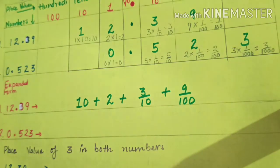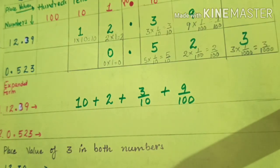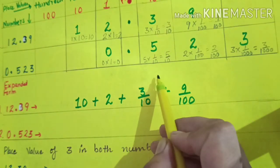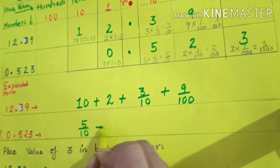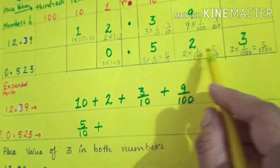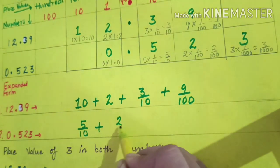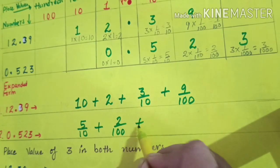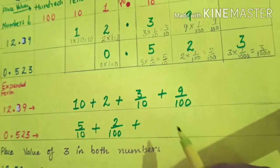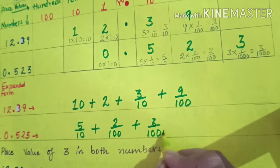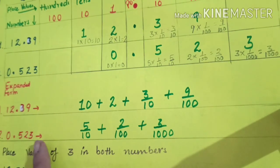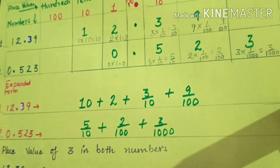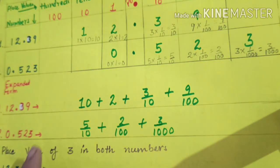We move to five. The place value of five is five-tenths, so we write five over ten. Two is at the hundredths position, and the place value of two is two-hundredths, so two over one hundred. Three is at the thousandths position, and the place value is three-thousandths. The expanded form of 0.523 is: five over ten plus two over one hundred plus three over one thousand. We found the place value of each digit and then added them to find the expanded form.